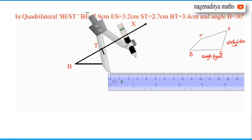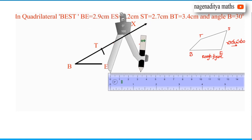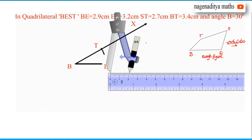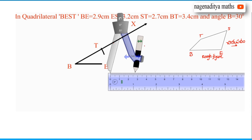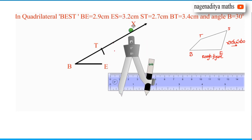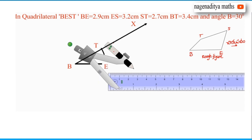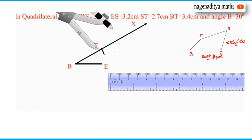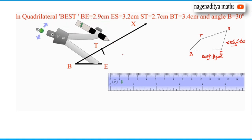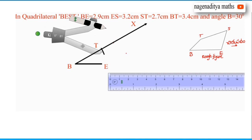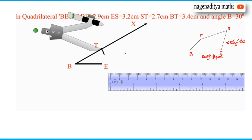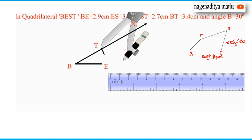Now we have to take 2.7 cm measurement. From the point T, we have to draw an arc with radius ST equal to 2.7 cm.